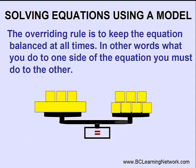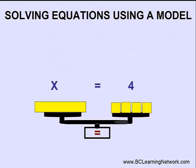We must keep the scale balanced at all times. So if I remove one block from the left side, I must remove one block from the right side as well. Notice, if I remove all three blocks from the left hand side, that leaves me with just the rectangular x-box all by itself. Now we know that x must equal four.